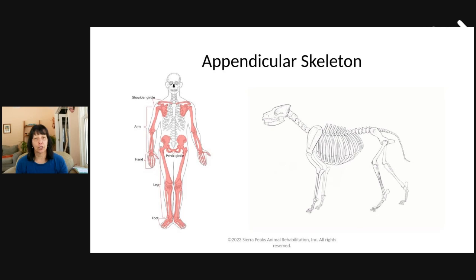The tarsal joint — the ankle, also known as the hock in animals — has the talus and calcaneus, plus one extra tarsal bone compared to humans. That pointy part on the back of a dog's hind leg about a third of the way up from the ground is actually their calcaneus — the point of their heel. Their metatarsal bones are very elongated, and they stand on their toes and paw pads rather than plantigrade. In the tarsal joint, they have primarily flexion and extension, without the pronation and supination we have in our ankle.